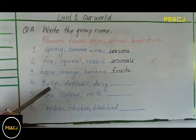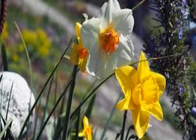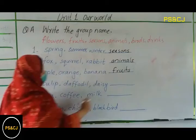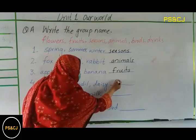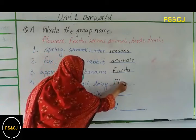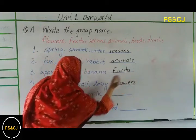The fourth one: tulip, daffodil, daisy — these are flowers.